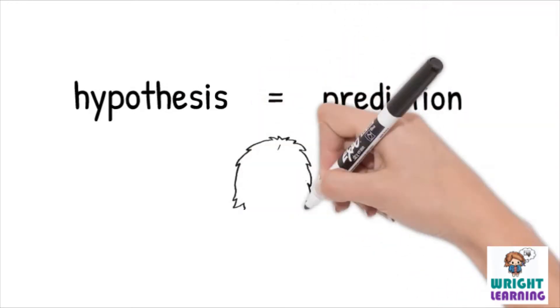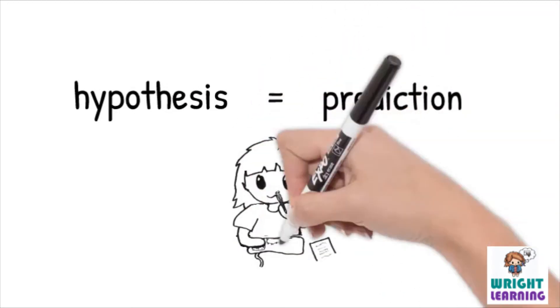An important part of scientific method involves coming up with and testing a hypothesis, which is a prediction of what we think we will observe based on what we already know.